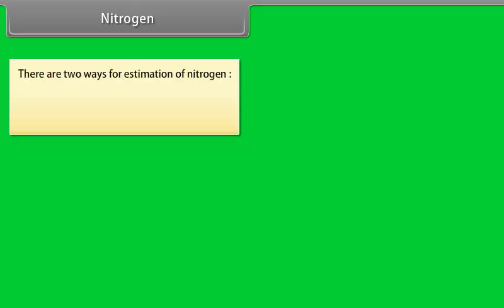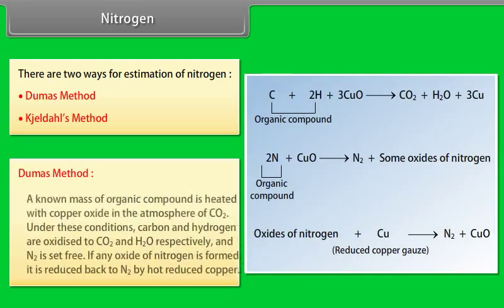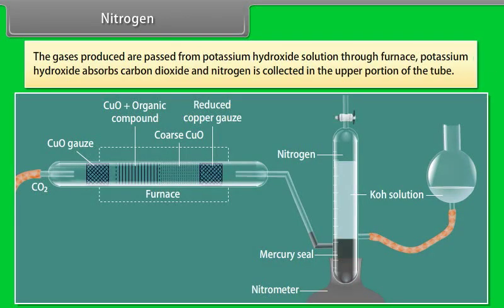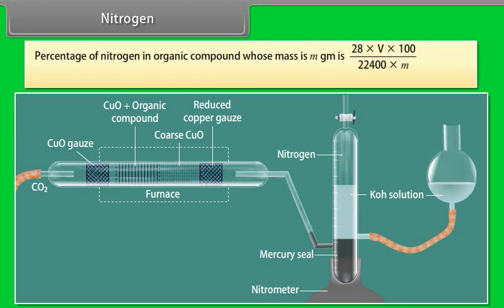Nitrogen estimation — Dumas method: a known mass of organic compound is heated with copper oxide in an atmosphere of carbon dioxide. Carbon and hydrogen are oxidized to CO₂ and water respectively, and nitrogen is set free. Any oxides of nitrogen formed are reduced back to nitrogen by hot reduced copper. The gases are passed through potassium hydroxide solution, which absorbs CO₂, and nitrogen is collected in the upper portion of the tube. Percentage of nitrogen = (28 × V × 100) ÷ (22,400 × M), where V is the volume of nitrogen at STP and M is the mass of the compound in grams.